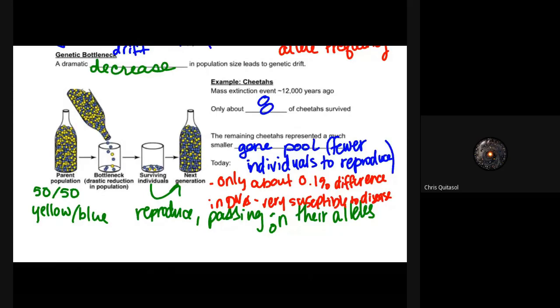Those eight cheetahs, whatever their traits were, that's what ended up being propagated. The remaining gene pool of those cheetahs represents a much smaller gene pool because there are fewer individuals to reproduce. When you look at cheetahs as a species and population as a whole, there's only about 0.1 percent difference in DNA, and they're very susceptible to diseases as a result.